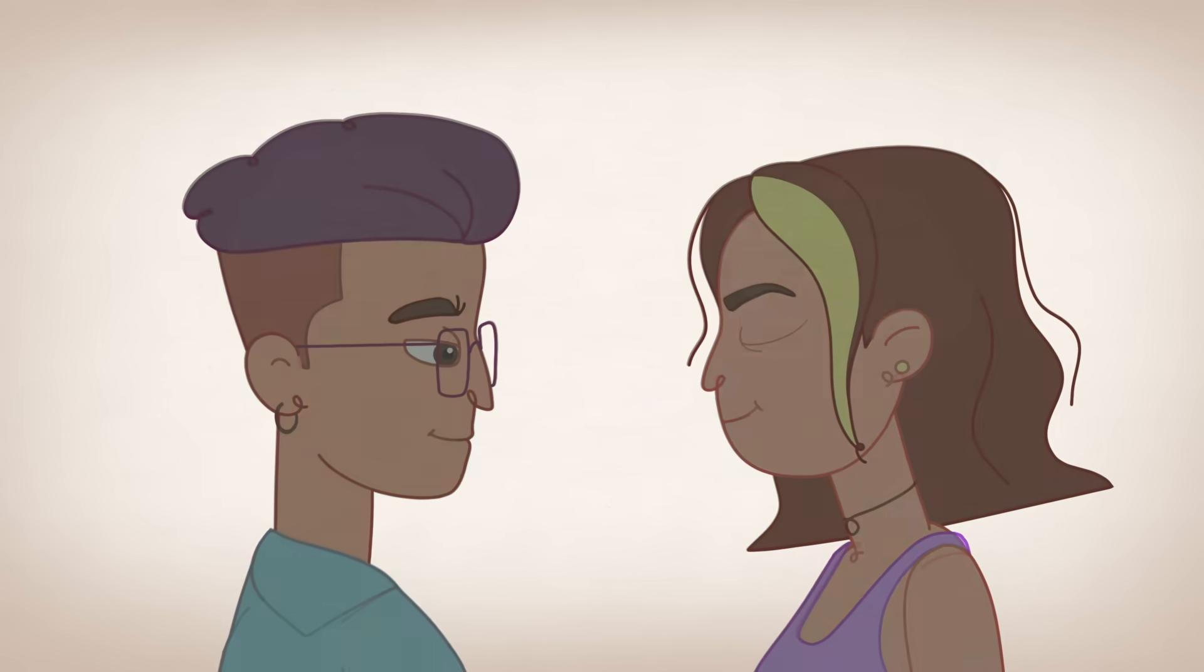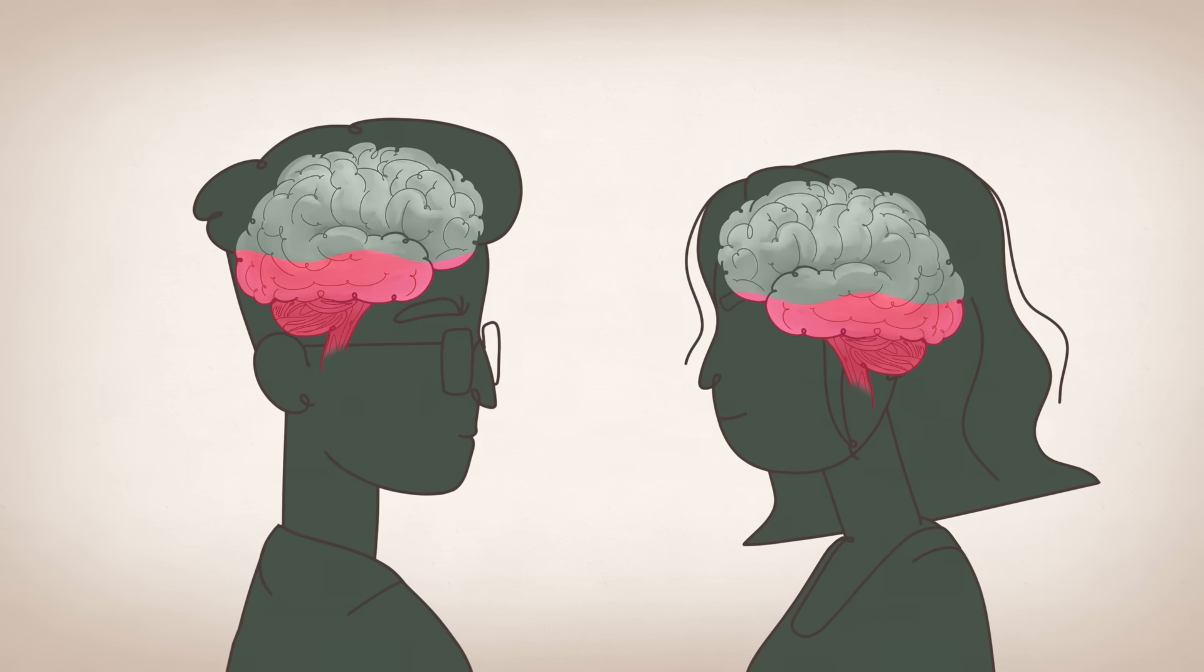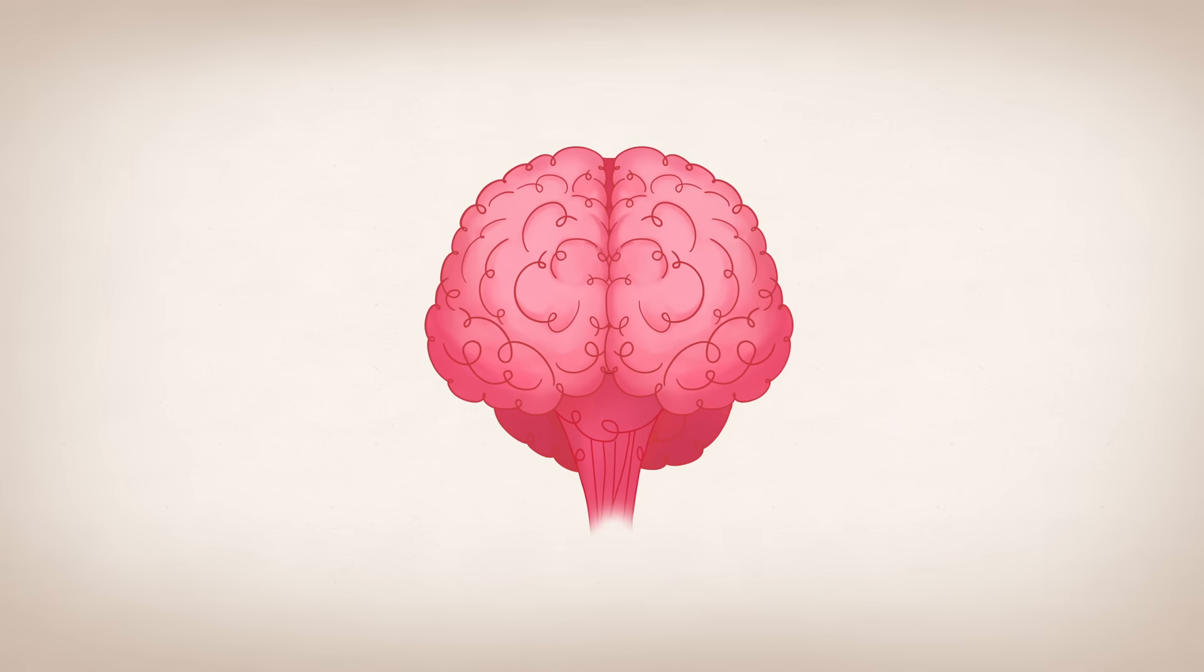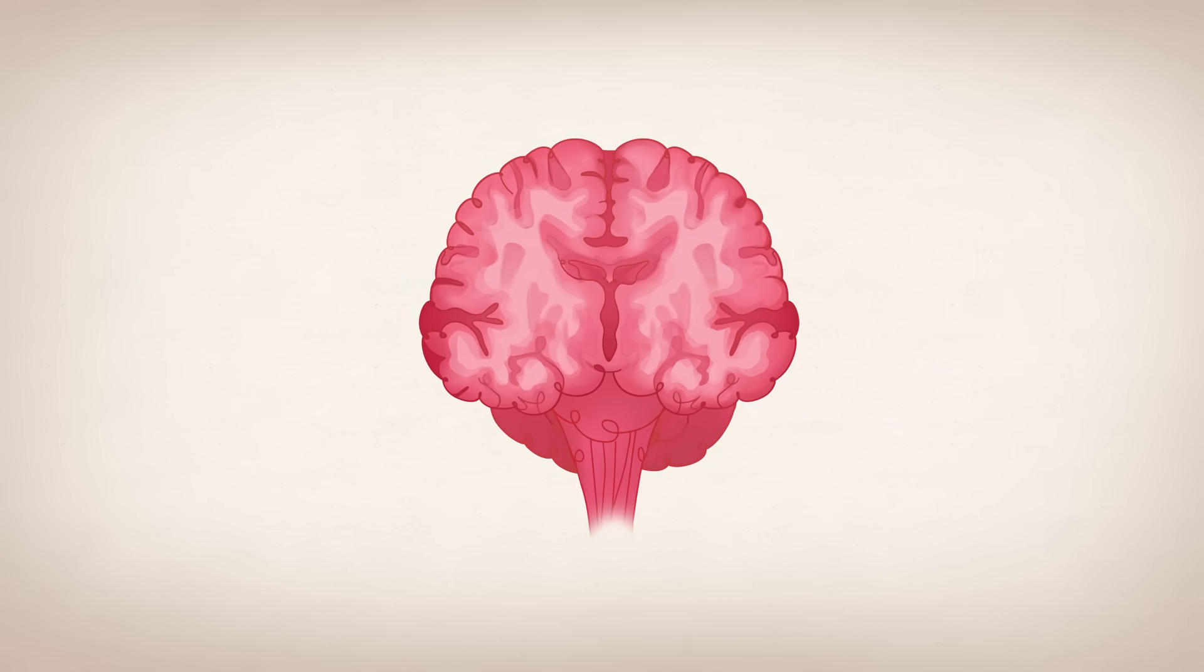One way neuroscientists have looked to define adulthood is by when the brain is fully grown. Brain development involves two trajectories. First, there is a reduction in gray matter.